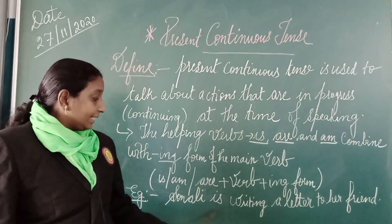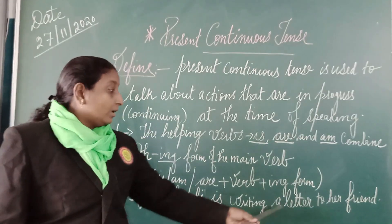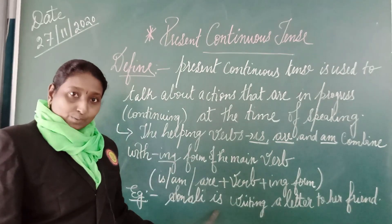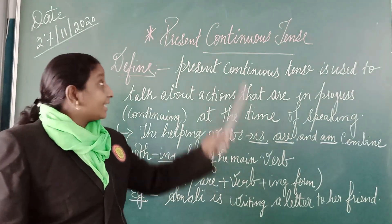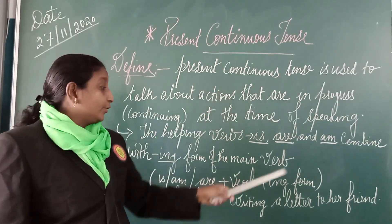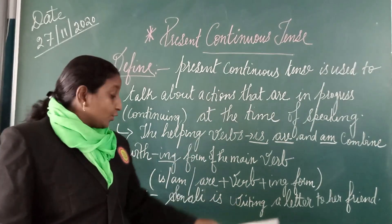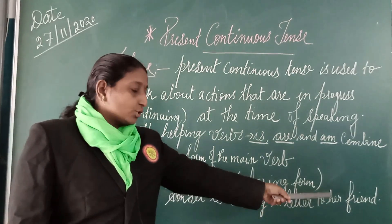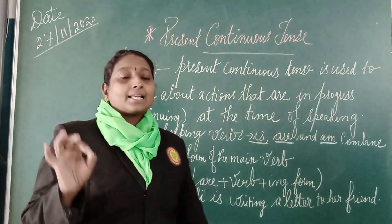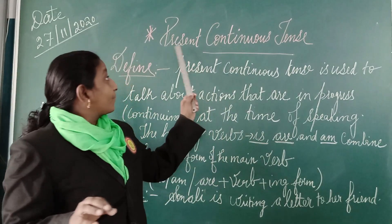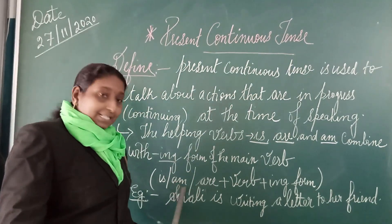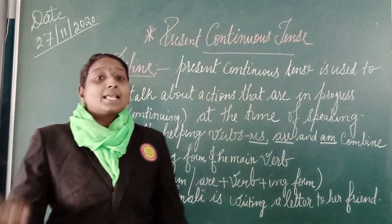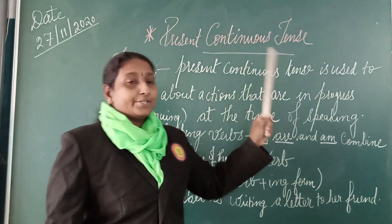For example: Sonali is writing a letter to her friend. Here, 'is' is a helping verb and 'write' is the main verb. In present continuous tense you add ING form, so it becomes 'writing.' The formula to remember is: is, am, are plus verb plus the ING form — that will be your present continuous tense.